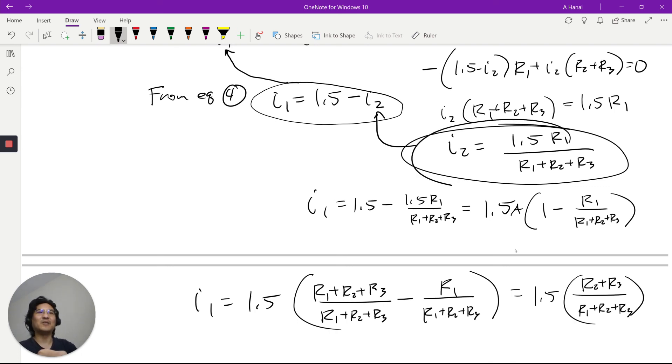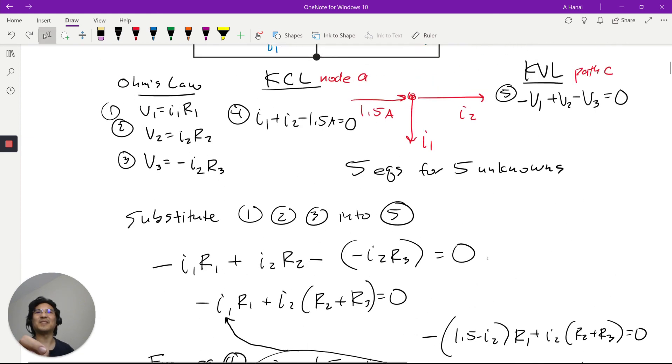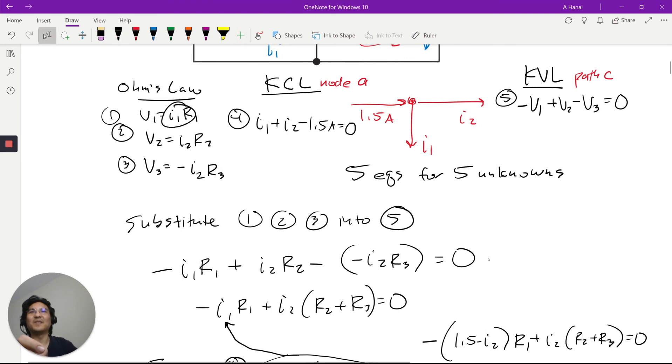Okay, so we got I2, I1, we got both currents, and then you just plug those into here. And then you get V1, and then V2, and V3. Then we got all five unknowns. Okay, hope that helped a little bit. See you on the next video.